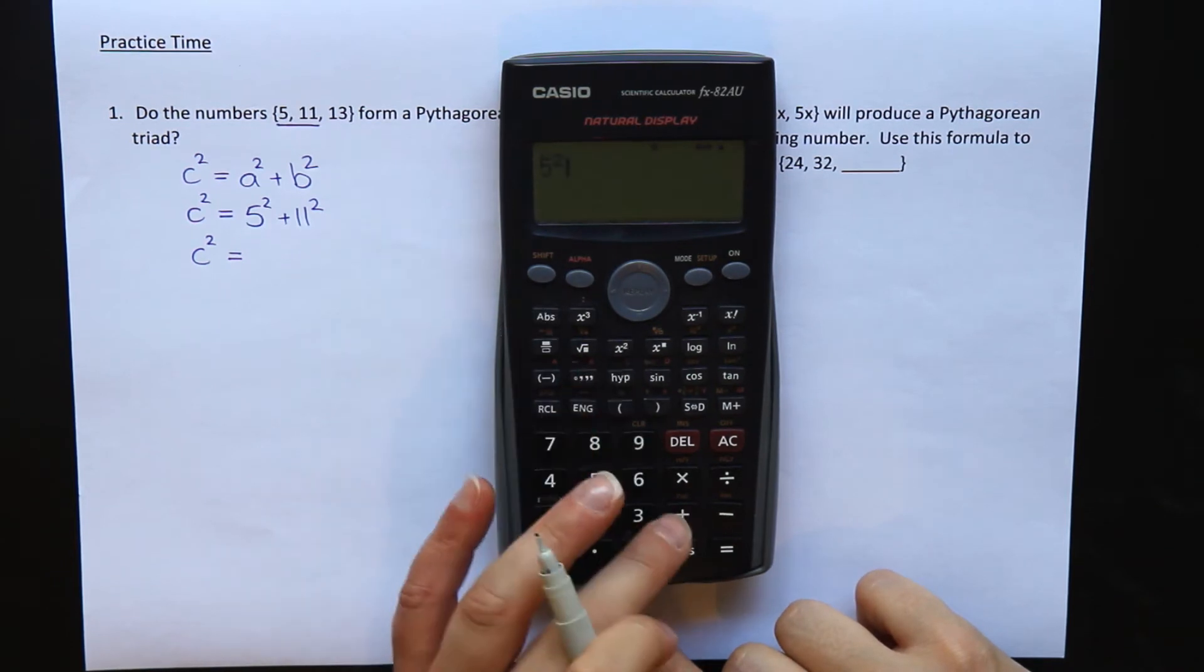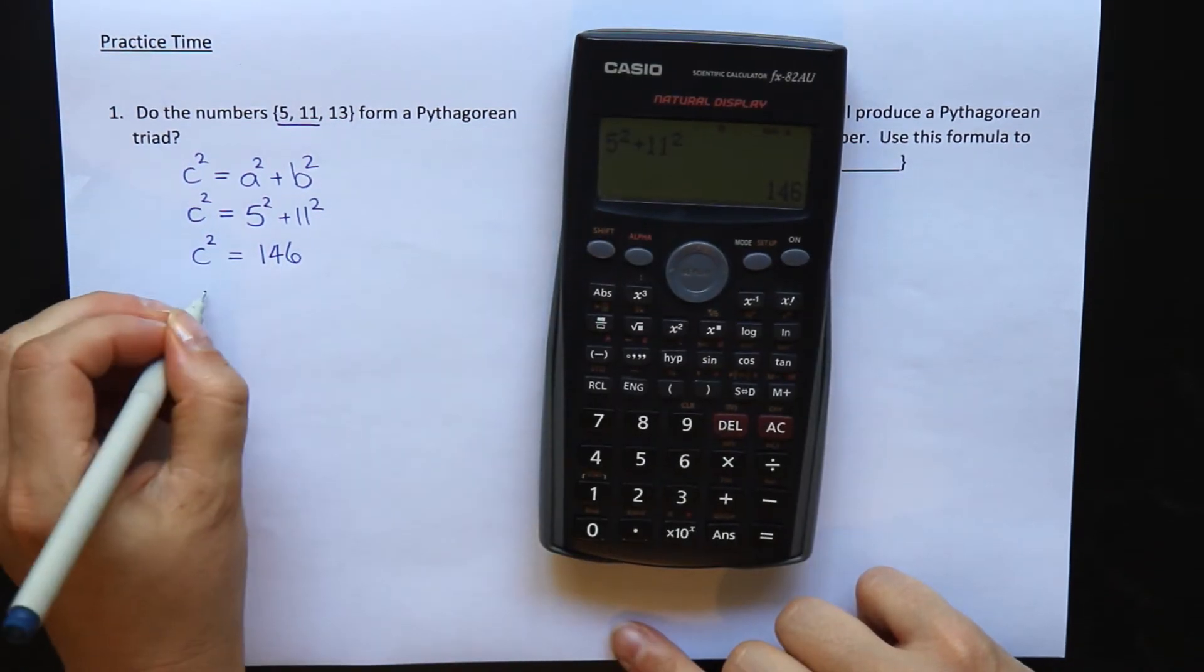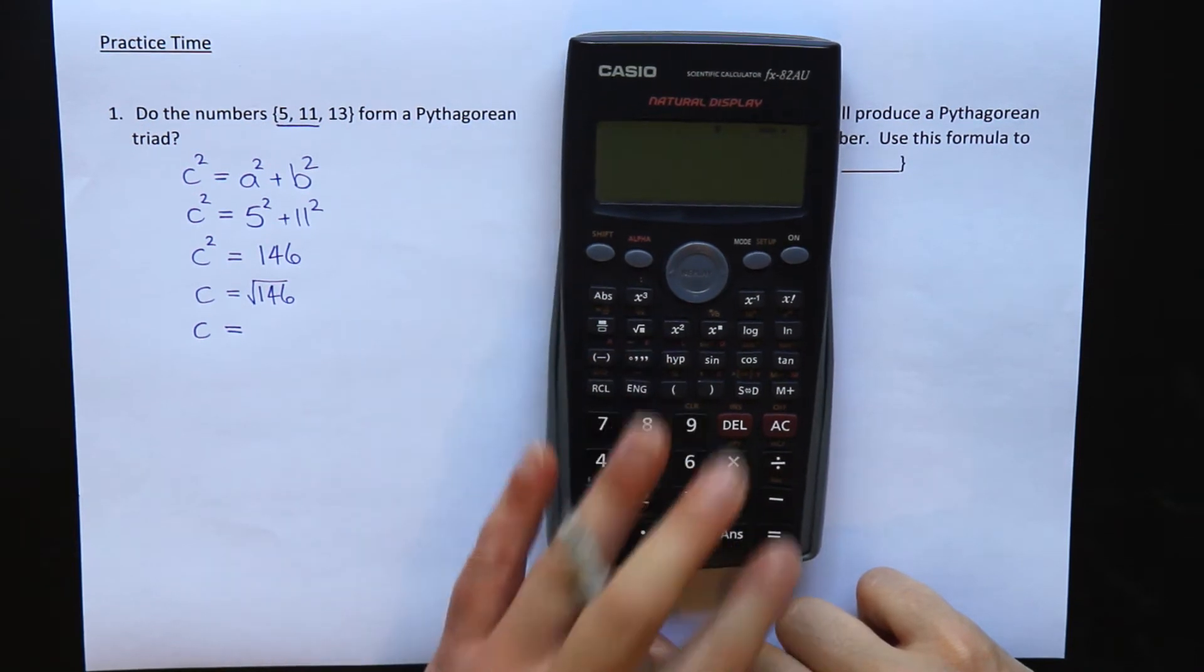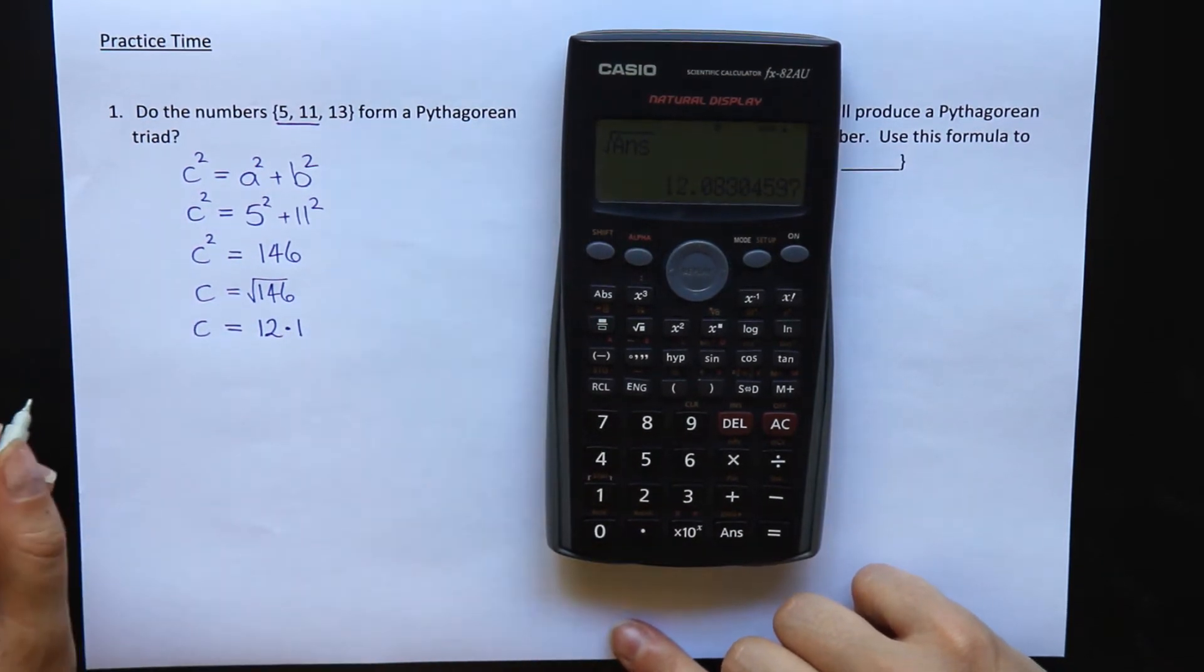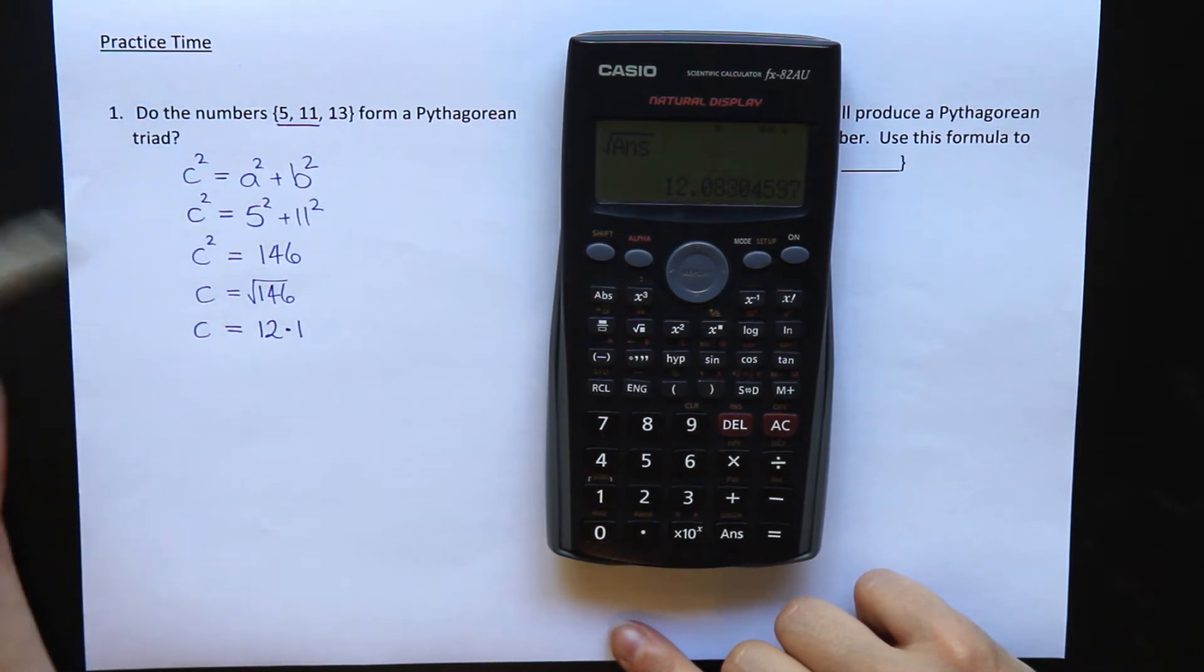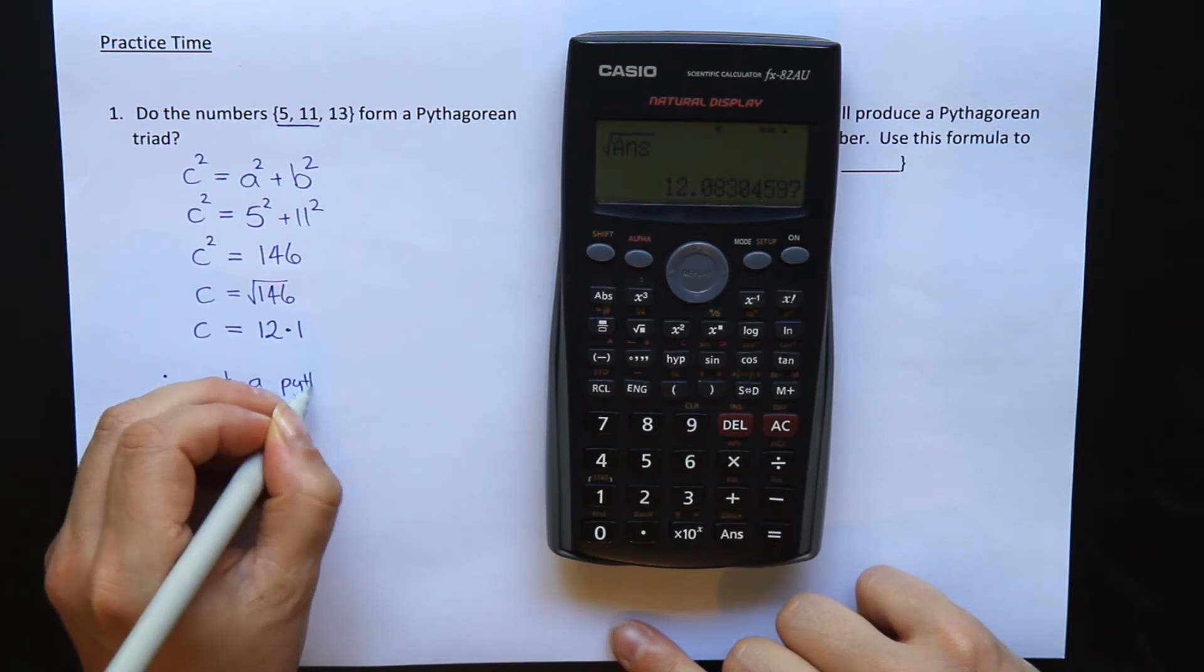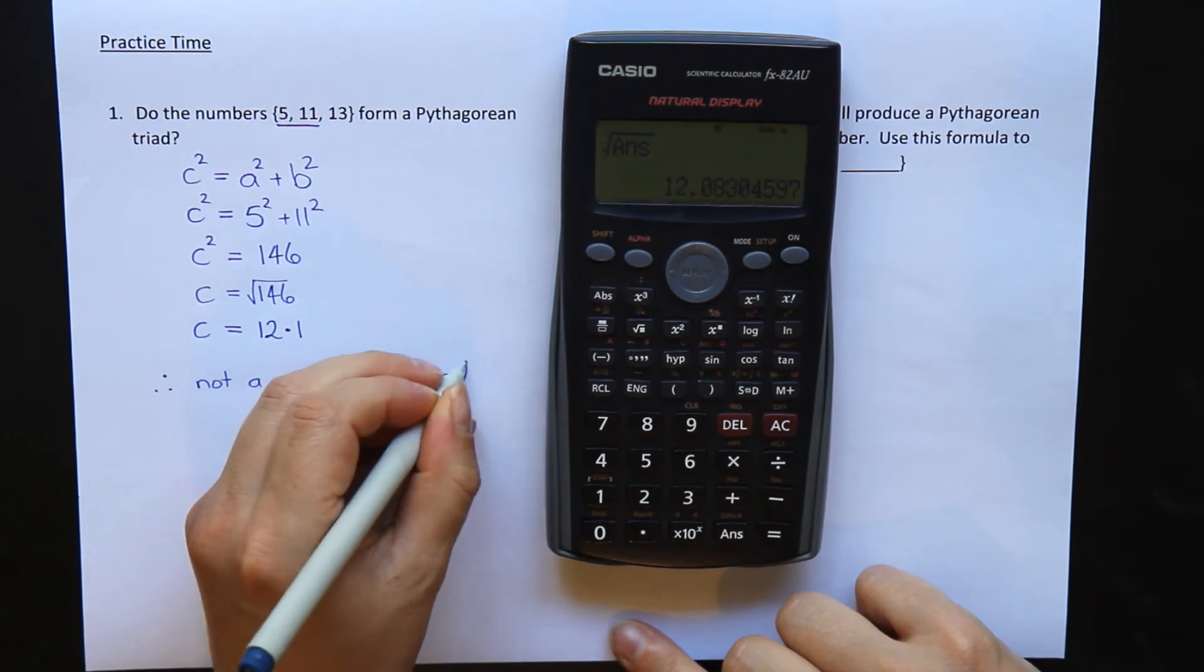Well, let's calculate that. 5 squared plus 11 squared equals 146. To get rid of the squared, I need to square root, and I get 12.1 to one decimal place. I had a 13 here in the bracket, so it is not a Pythagorean triad. Therefore, not a Pythagorean triad. Hopefully you got that.